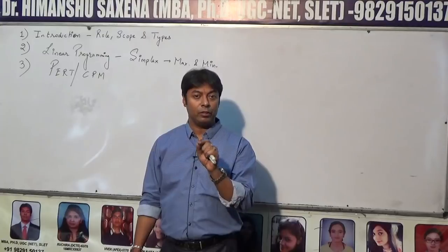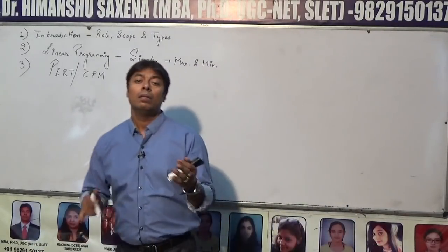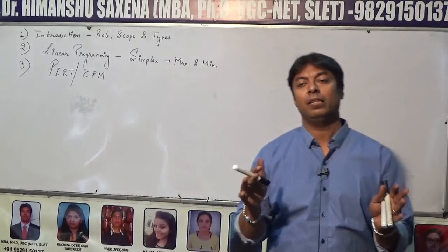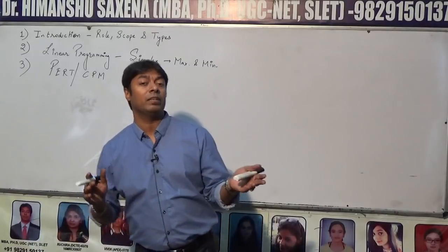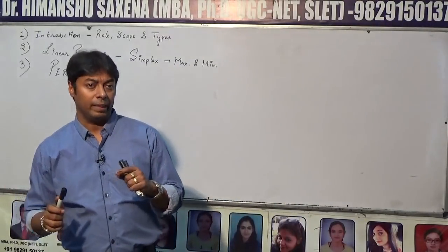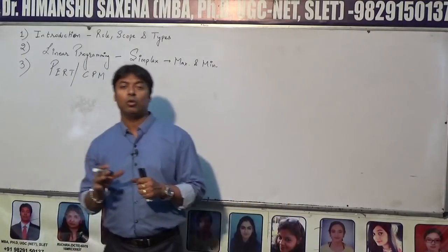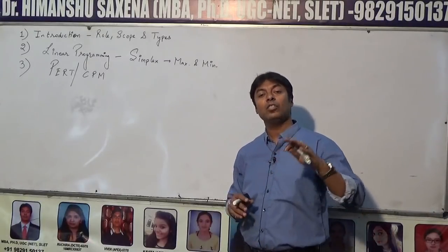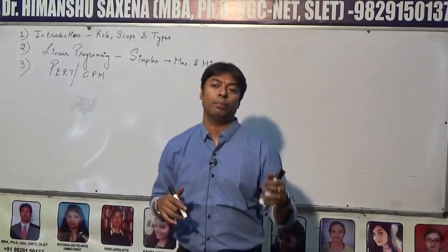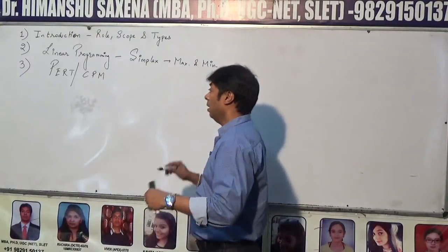PERT makes use of three time estimates: the optimistic time, which is the shortest time; the pessimistic time, which is the longest time for completing the activity; and the most likely time, which lies somewhere between the optimistic and pessimistic. CPM is based on one time estimate. Before executing the project, the project manager identifies the most critical activities using CPM. Practicals on PERT and CPM along with their differences are very important.